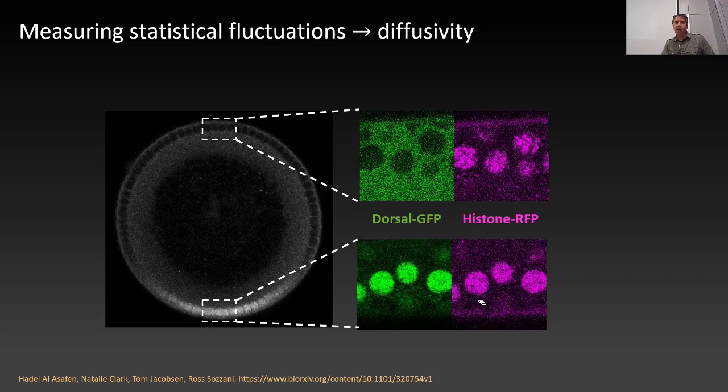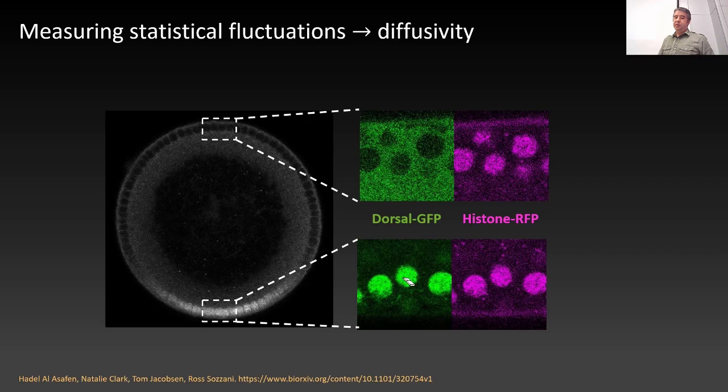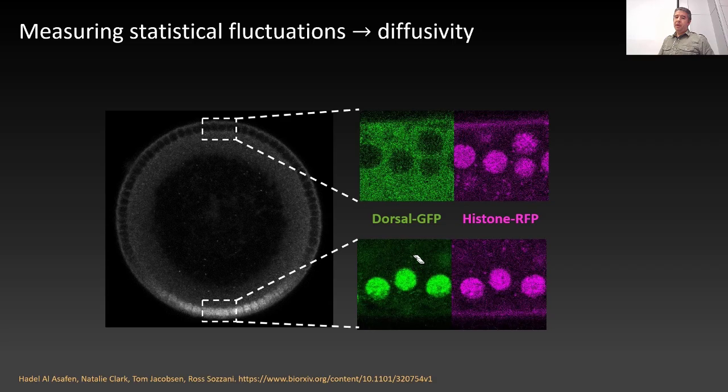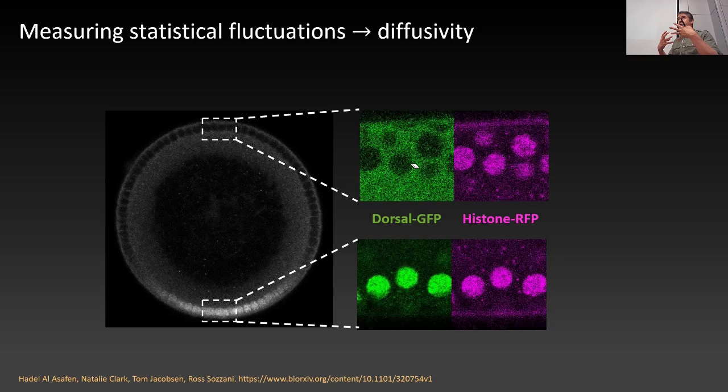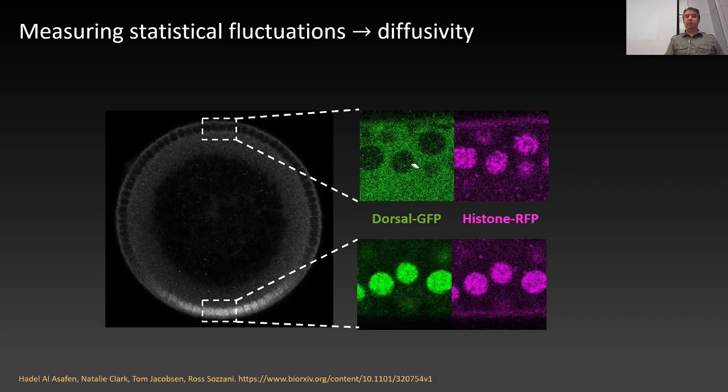Dorsal is in the nucleus on the ventral side, but there's also a non-zero amount of GFP in the cytoplasm. On the dorsal side, it's mostly in the cytoplasm, but there's a non-zero amount of dorsal in the nucleus as well — that's probably dorsal-cactus complex, which is why we have to background subtract it out using deconvolution.